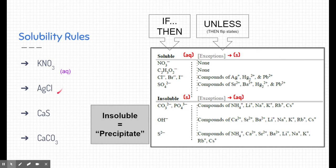Let's look at our second example. I'm going to look at the negatively charged substance in the compound — chlorine. I find chlorine in the rules and see this should be a soluble substance. But before jumping to that conclusion, I check what chlorine is attached to — silver. And looking at the exceptions list, silver is an exception. So if silver is attached to chlorine, it's not aqueous; it becomes insoluble — a precipitate or a solid.